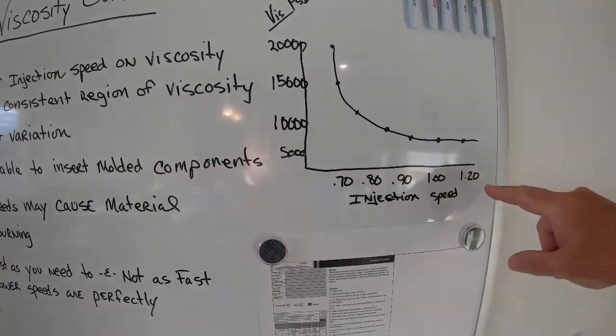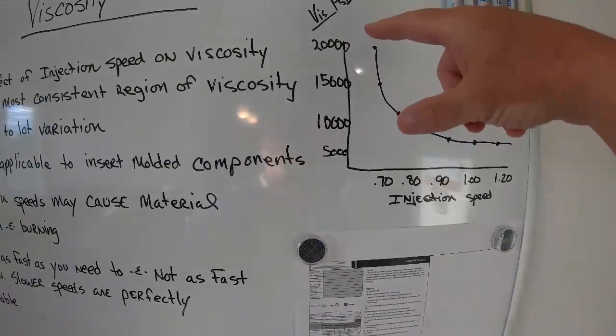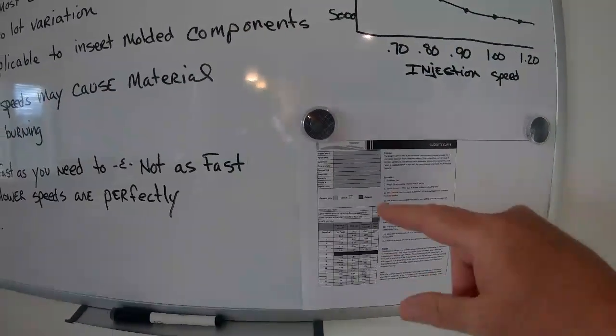We're going to show the viscosity curve — your set points for injection speed going across and how it affects the pressure. Looking at this graph, the purpose of this test is to determine the optimized injection viscosity for a particular material, mold, or design. This data sheet provides a graphical representation of molecule alignment or orientation — the faster a plastic moves when injected, the more aligned and oriented the molecules are.